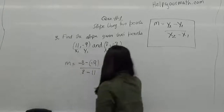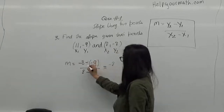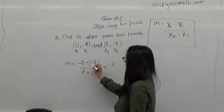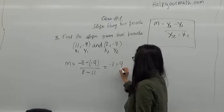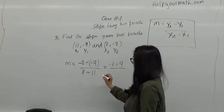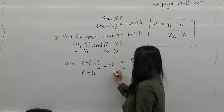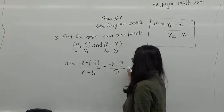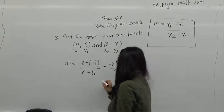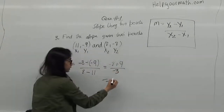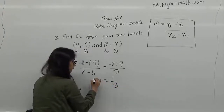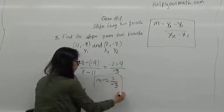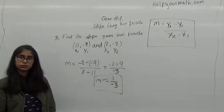Simplifying: minus 8, and minus 1 multiplied by minus 9 gives me plus 9, over 8 minus 11 is negative 3. So minus 8 plus 9 is 1 over negative 3. So my slope here is negative 1 over 3.